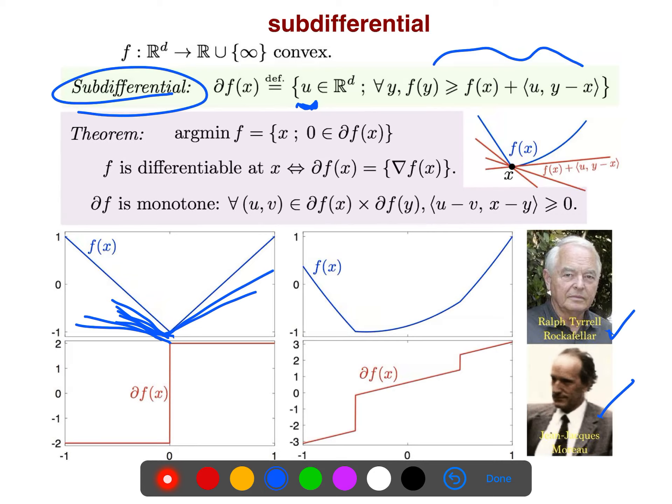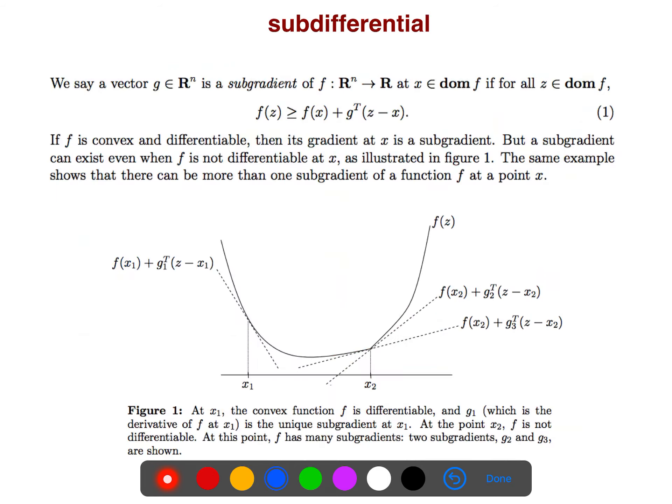And so, if it is continuous, if f is a continuous function, then sub-differential is exactly the gradient, there is no difference, and it's not set-valued anymore.